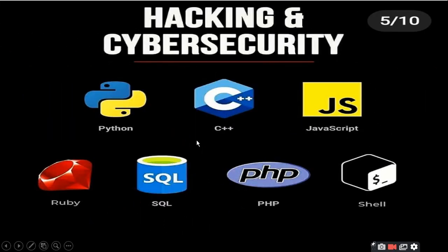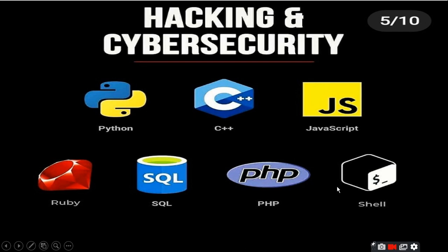Hacking and Cyber Security. For ethical hacking, the languages are Python, C++, JavaScript, Ruby, SQL, PHP, and Shell Programming. Shell programming is used in your command prompt environments like Linux, CMD, Windows, and DOS. These are all part of shell programming — Linux and shell programming are closely related.